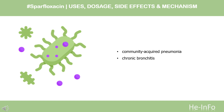and acute bacterial exacerbations of chronic bronchitis caused by Chlamydia pneumoniae, Enterobacter cloacae, Haemophilus influenzae, Haemophilus parainfluenzae, Klebsiella pneumoniae, Moraxella catarrhalis, Staphylococcus aureus, or Streptococcus pneumoniae.